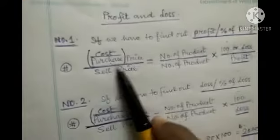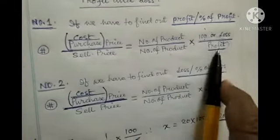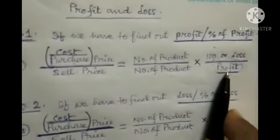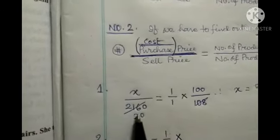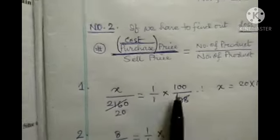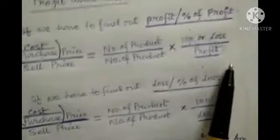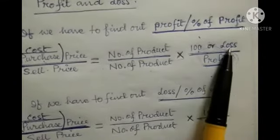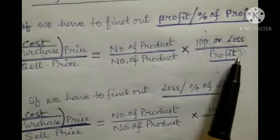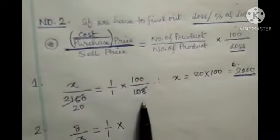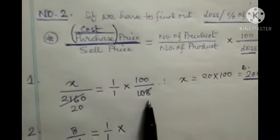We have to find the cost price, so we use Formula 1 since profit percentage is given. Here x is the cost price divided by 2160 (the sale price), equal to 1 by 1 into 100 divided by profit percentage. Since there is no loss, we write 100 divided by profit percent, which is 8, giving 108. After calculation, x equals rupees 2000.